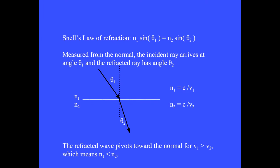Measured from the normal, the incident ray arrives at angle theta1 and the refracted ray has angle theta2. Theta2 is said to be the angle of refraction. The refracted ray has pivoted toward the normal. This wave is moving from regions of high to low velocity or from regions of low to high index.